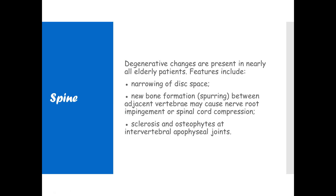Spinal features include narrowing of the disc space, osteophyte formation between adjacent vertebrae which may cause nerve root impingement or spinal cord compression, sclerosis, and osteophytes at intervertebral apophysial joints.